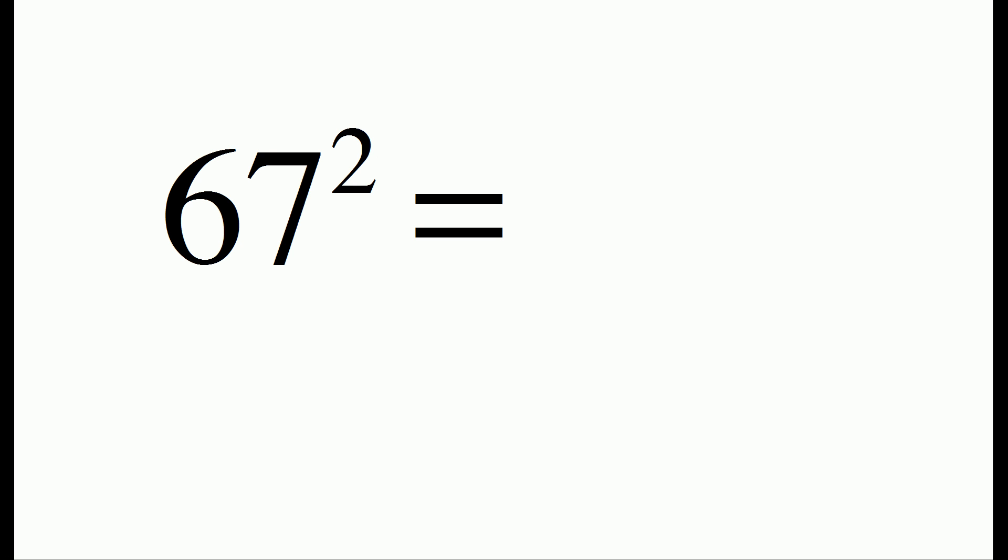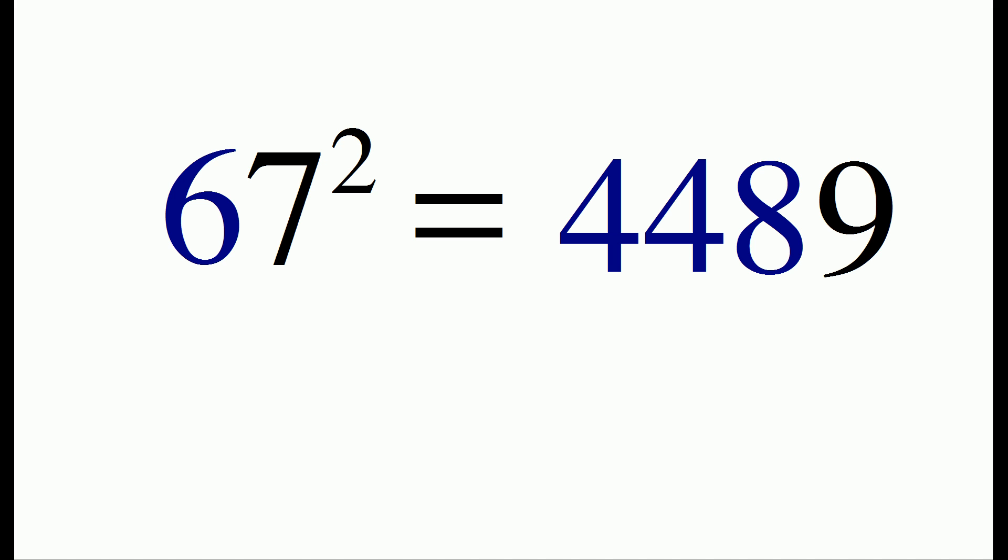There is a similar procedure for numbers that start with a string of 6's and end in 7. For 67 squared, we write out the number 9, and then we count how many times the digit 6 appears. In this case, it's 1. And that's how many times we write the number 8. And then we write the number 4 one extra time. So 67 squared is 4489.